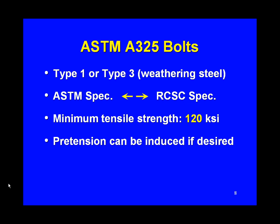There are two grades of high-strength bolts: A325 and A490. A325 bolts come in two types — type 1 or type 3. Type 3 is weathering steel; otherwise there's no difference. If you're doing a bridge in weathering steel, you'd use the type 3 fastener. The minimum tensile strength is 120 KSI — that's double what it was for A307 bolts. If we need pretension, we can get it with these bolts.